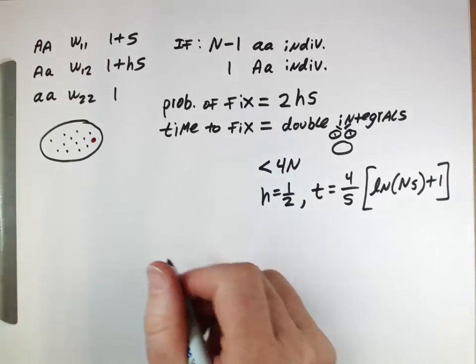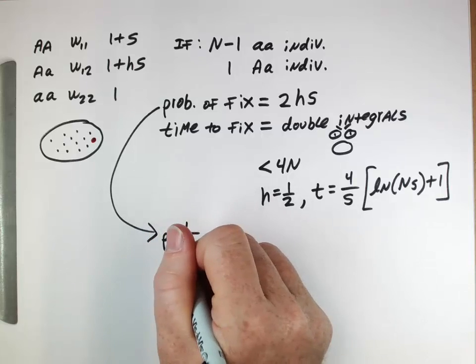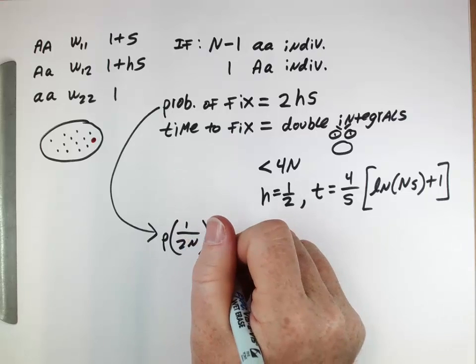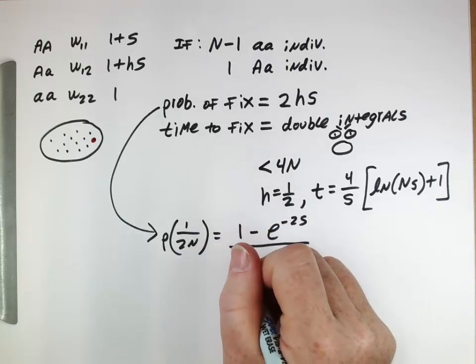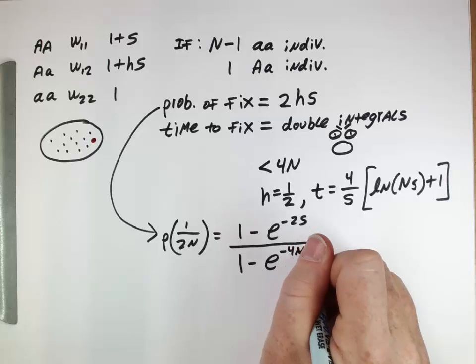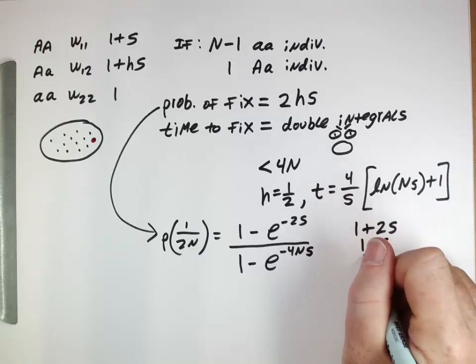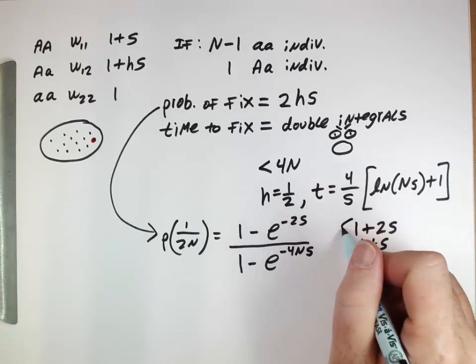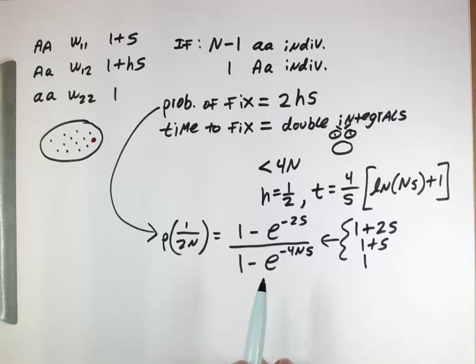This was actually also a simplification, the actual probability fixing. The actual equation: probability fixing starting from a frequency of 1 over 2N is (1 - e^(-2s)) / (1 - e^(-4Ns)). When you have fitnesses of 1+2s, 1+s, and 1, you would get this equation here. So you may see this equation written in various textbooks. But this reduces to twice the heterozygous advantage in general. When s is small and when N is large, you get that simplification.